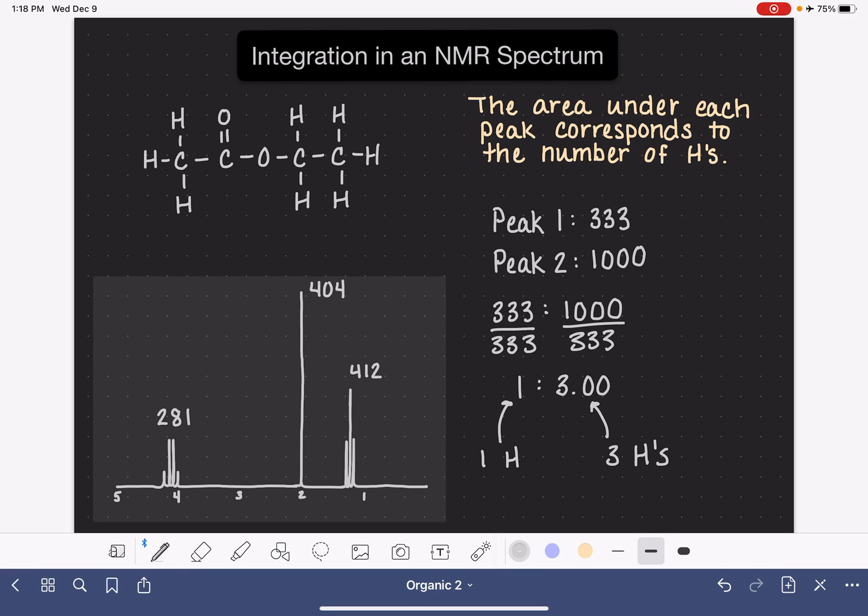Now this does not necessarily mean that there is exactly one hydrogen atom associated with peak one and exactly three hydrogen atoms associated with peak two. Another option would be for peak number one to be associated with two hydrogen atoms and peak number two with six hydrogen atoms, because that 2 to 6 has the same ratio. Or it could be three hydrogen atoms to nine hydrogen atoms. This just gives us the relative ratio of the hydrogen atoms in peak one to the hydrogen atoms in peak two. It's going to be our job to use other types of spectroscopy such as mass spec to determine the exact number of hydrogen atoms in this molecule.